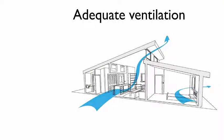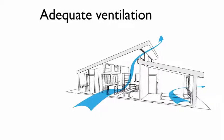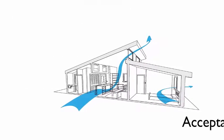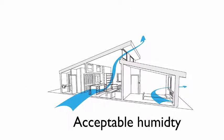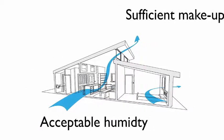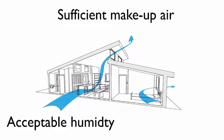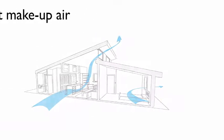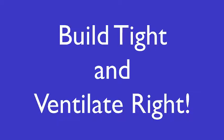Tight buildings need adequate ventilation in order to keep the relative humidity at an acceptable level and also provide sufficient make-up air for good indoor air quality. Build tight and ventilate right should both be considered at the design stage, as they're both linked together.